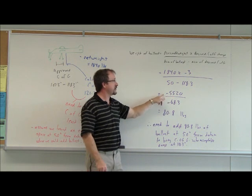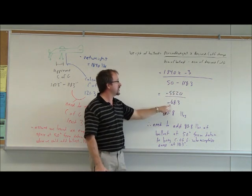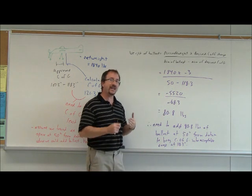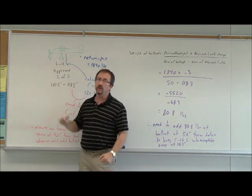To do the math: 1840 times minus three equals minus 5520. 50 minus 118.3 equals minus 68.3. Dividing these, we find that we have to put 80.8 pounds into the aircraft at the 50-inch moment.